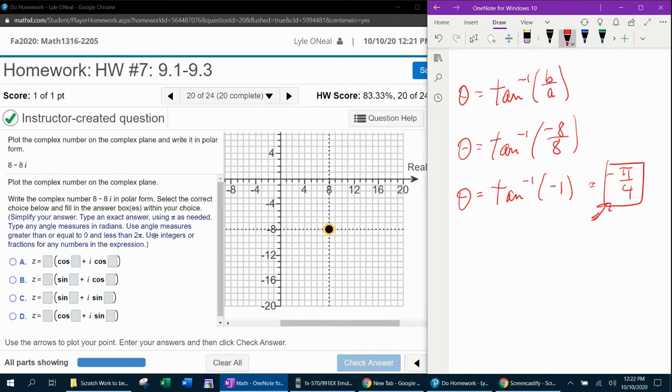However, it says to use an angle measure greater than 0 and less than 2 pi. So since this angle is not in the appropriate boundaries, what we're going to need to find is a corresponding angle that is from 0 to 2 pi. So here's how we do that.